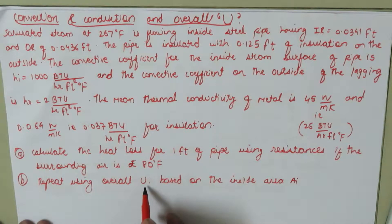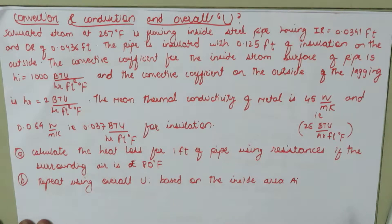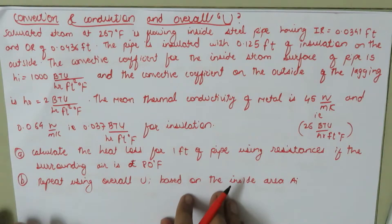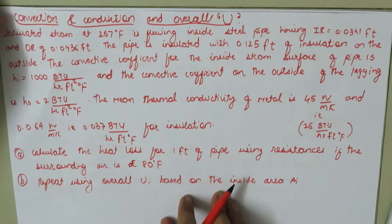The convective coefficient for the inside steam surface of the pipe is 1000 BTU/hr·ft²·°F, and the convective coefficient on the outer side of the insulation is 2 BTU/hr·ft²·°F. The mean thermal conductivity of the metal is 26 BTU/hr·ft·°F and for the insulation it is 0.037 BTU/hr·ft·°F. We are asked to calculate the heat loss for one foot of pipe using resistances, and then repeat using the overall heat transfer coefficient.